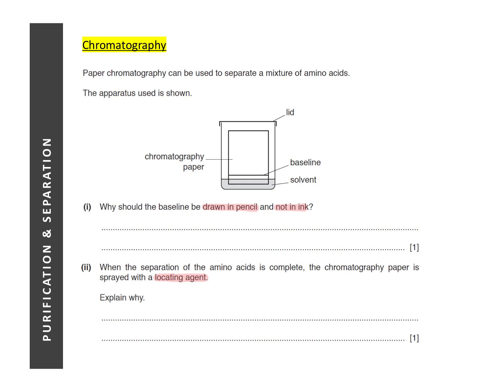Why should the start line be drawn in pencil? Because pencil lead, it does not dissolve in the solvent. Pencil lead is actually graphite. Graphite has a giant molecular structure, so it doesn't dissolve in any solvent. So therefore it will not be separated with the mixture.